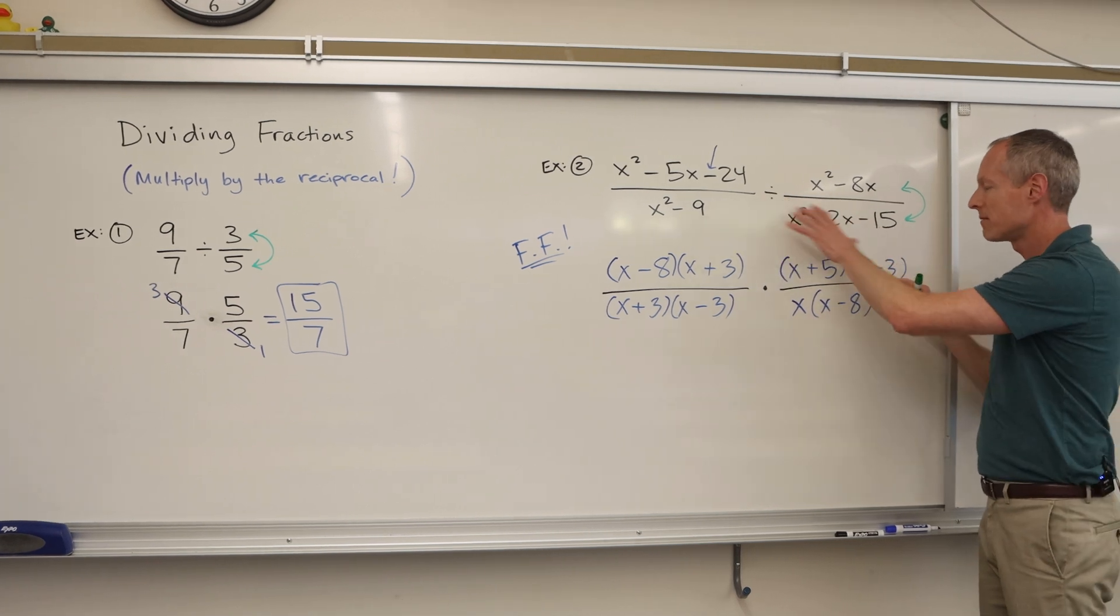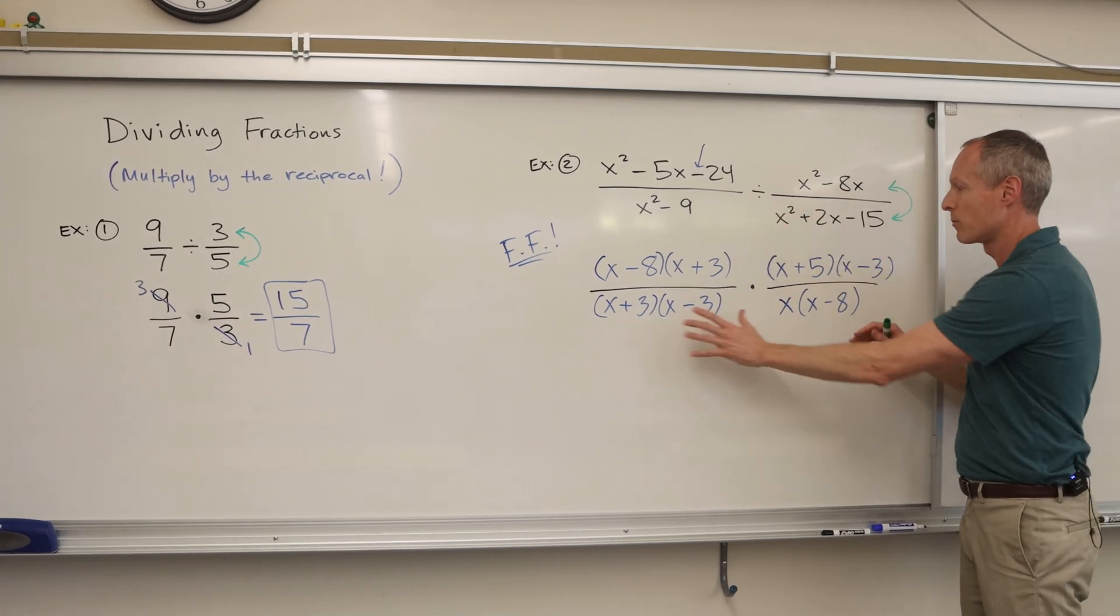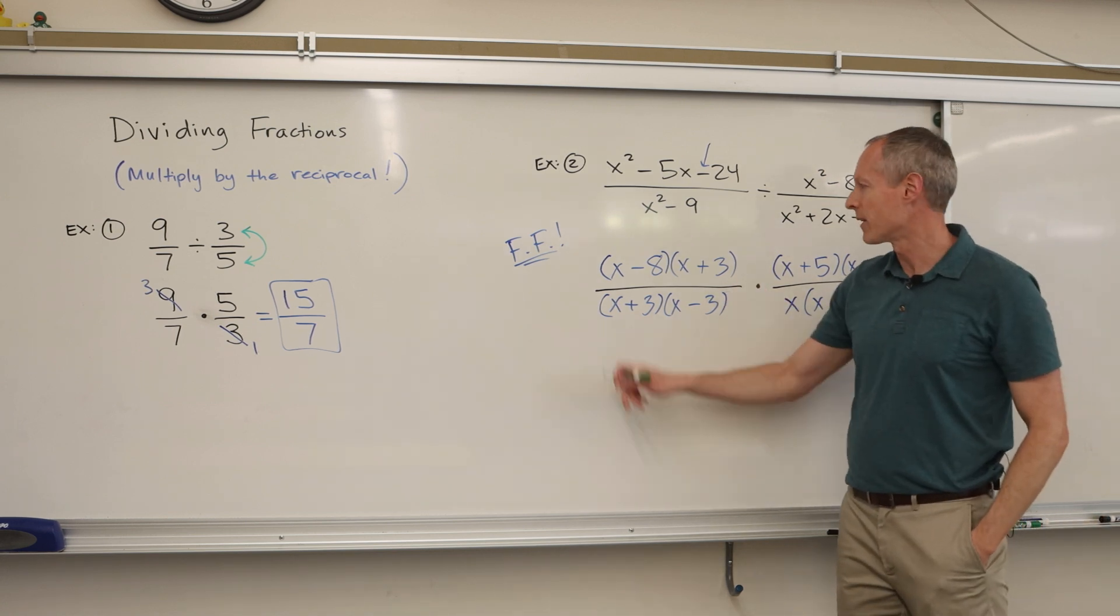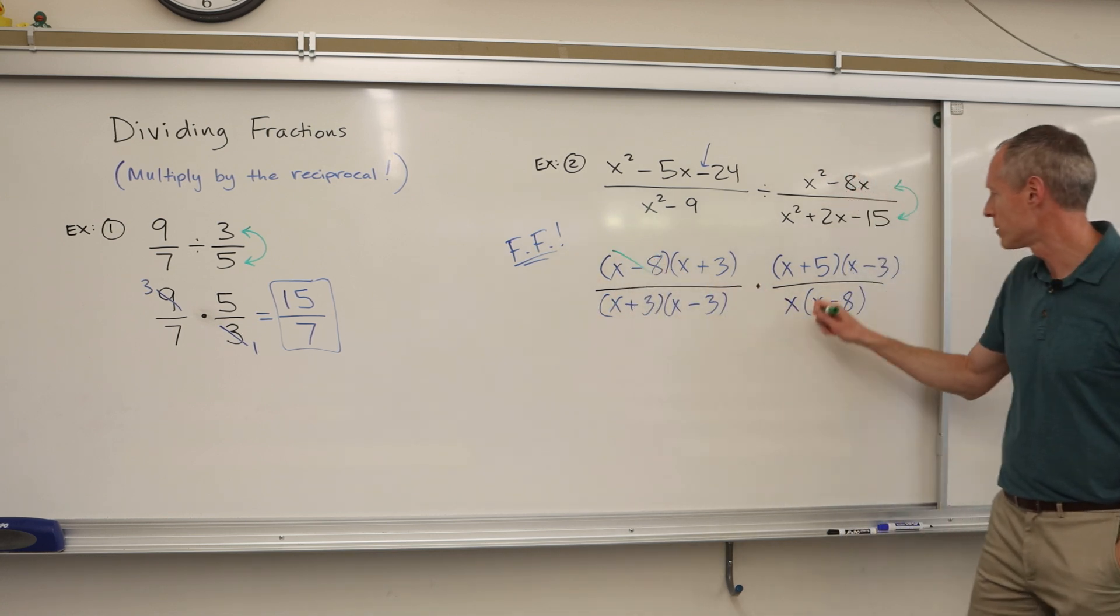So we factor everything. Now we look anywhere on the top where you see a like term with anything on the bottom because they're all being multiplied, you can cancel them out. You can even make a little fun sound effect. x minus 8. Whoosh, whoosh. Those are gone.